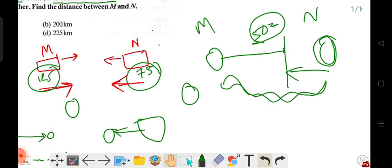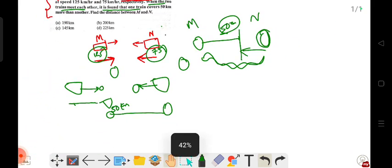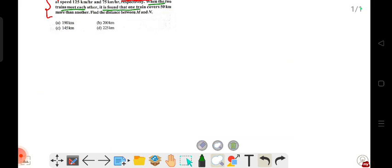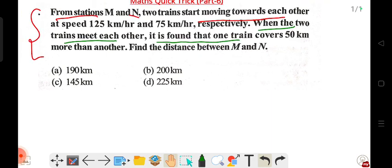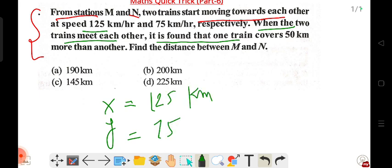The traditional method uses the speed-distance-time formula which is time consuming. Instead, I'll show you how to solve it in seconds. First, let the first speed be x and the second speed be y. So x = 125 km/hr and y = 75 km/hr.